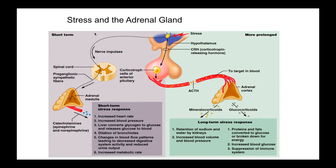The hypothalamus can send a signal down to the pituitary. There's an anterior pituitary and a posterior pituitary. In this particular case, we have the anterior pituitary that's going to send signals — ACTH, adrenocorticotropic hormone — to the adrenal cortex.